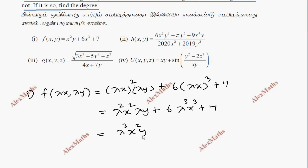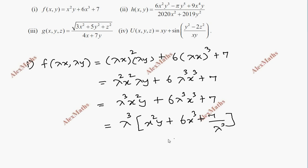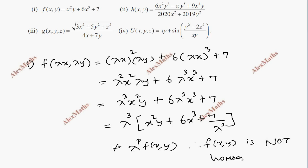We have x squared y. This gives 6 lambda cube x cube plus 7. The first term has lambda cube, but the second term does not match — the original function is not equal. Therefore, f of x, y is not homogeneous.